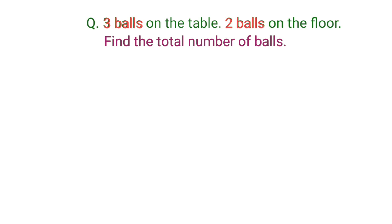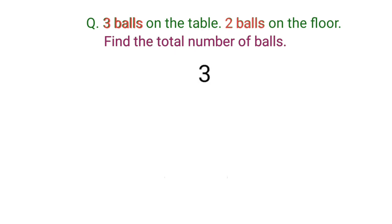'Total number' means we have to do addition. Three poles plus two poles equals five poles. Therefore the total number of poles is equal to five.